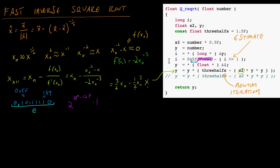So what happens if you take your floating point number and right shift it by one? If E represents the exponent bits for the floating point number, right shifting by one is like dividing by two. And since the sign bit is always zero — we're always finding the square root of a positive number — we shift a zero in at the top. So this is equivalent to two to the power of (E/2 − 127). That's what shifting right by one does: it divides the exponent by two.